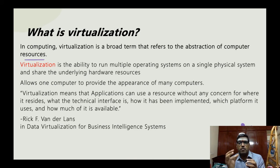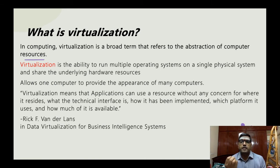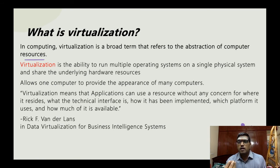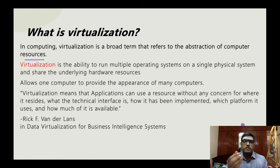For example, one operating system is Microsoft Windows. You can also run Ubuntu, or another operating system like an ISO. This is called virtualization. It allows one computer to provide the appearance of many computers — that feeling where your computer is like many mini computers.